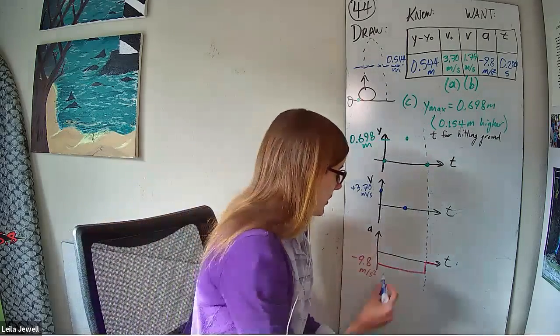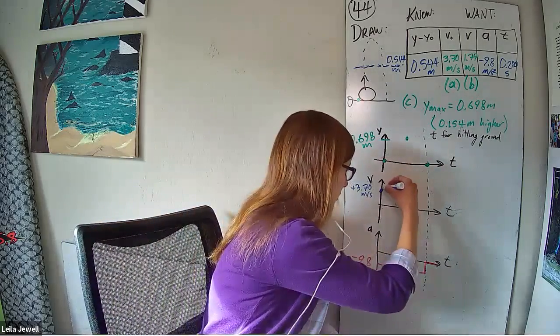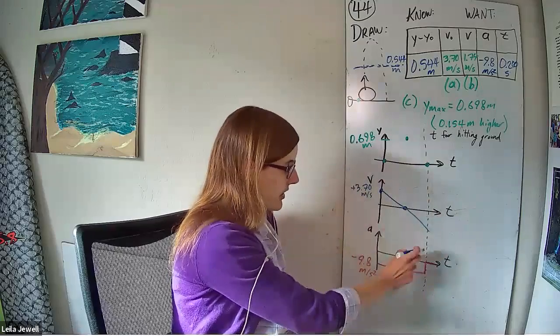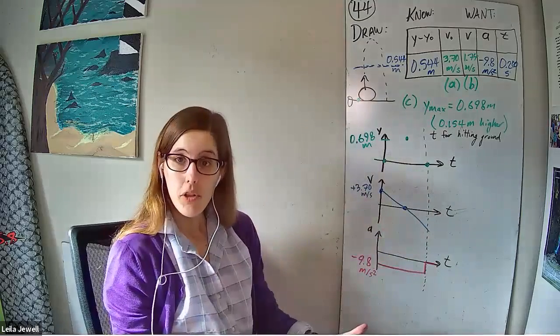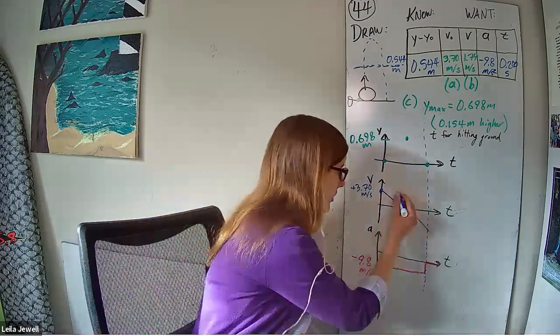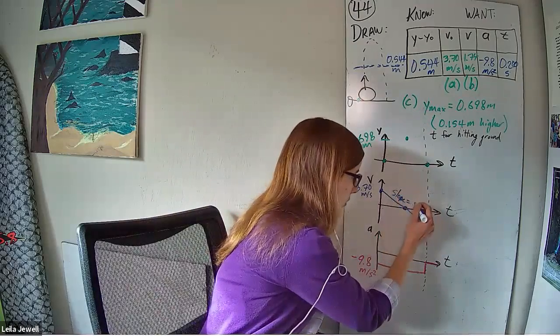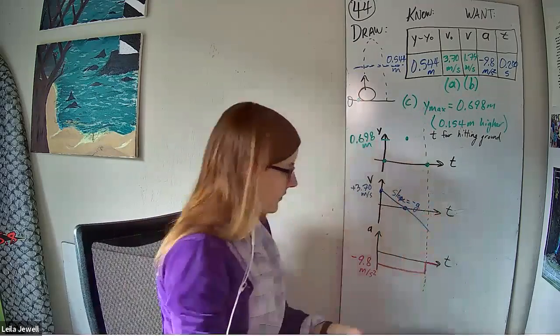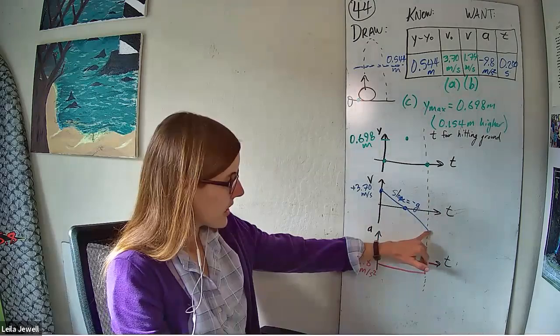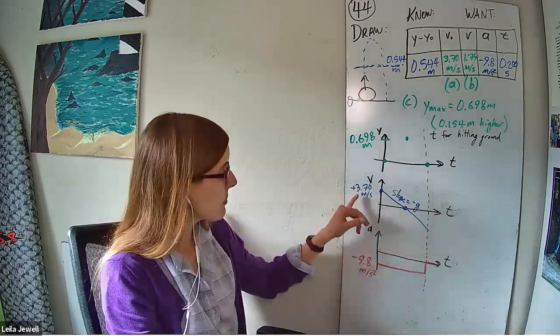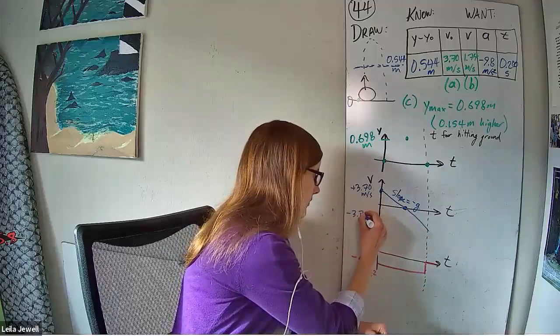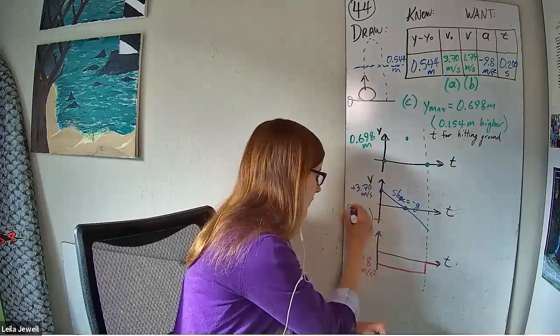So since we have two points and we know it is a straight line, we can just fill in a straight line here. And notice this line has a downward slope. It is a negative slope. You could figure out the slope of it. It would be exactly negative 9.8 or negative g. So that's not a coincidence. Another thing we could figure out from symmetry here is that the velocity at the bottom would be the exact same speed as the beginning, but now in the negative direction. So that's a little bit of a bonus data point.